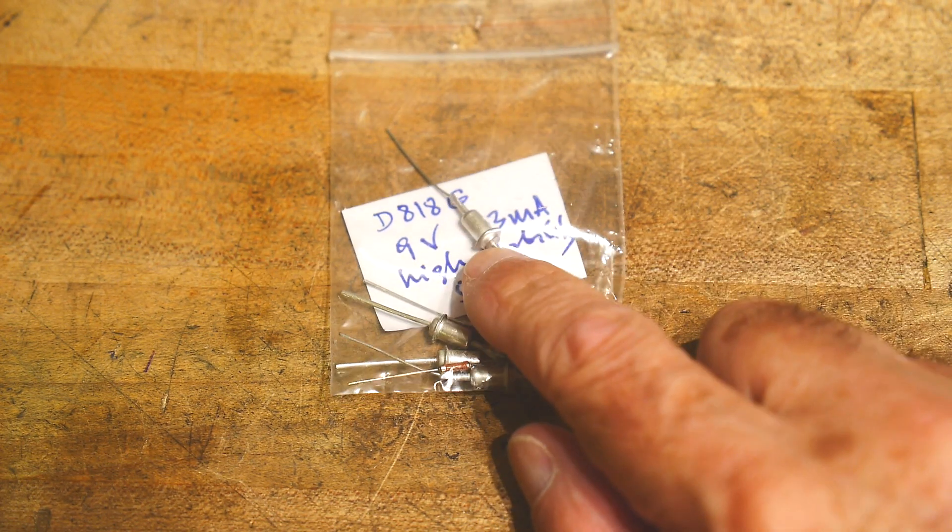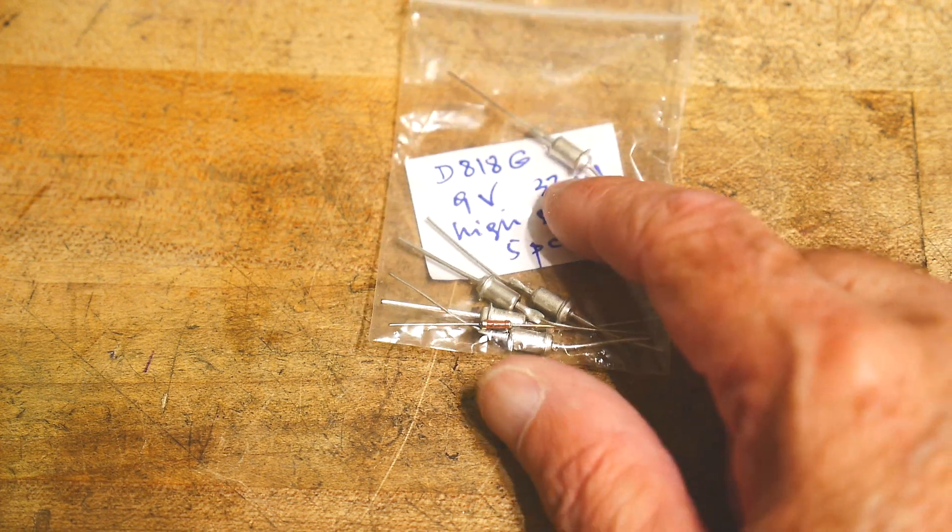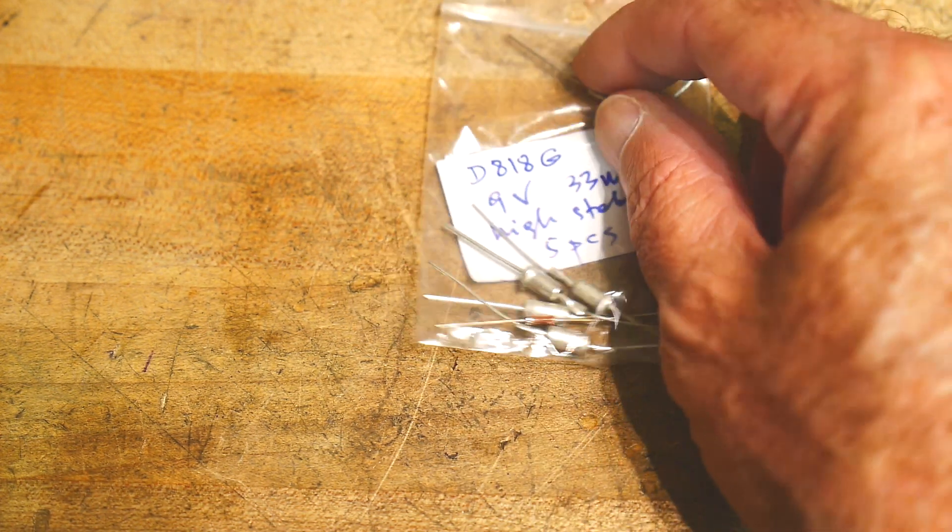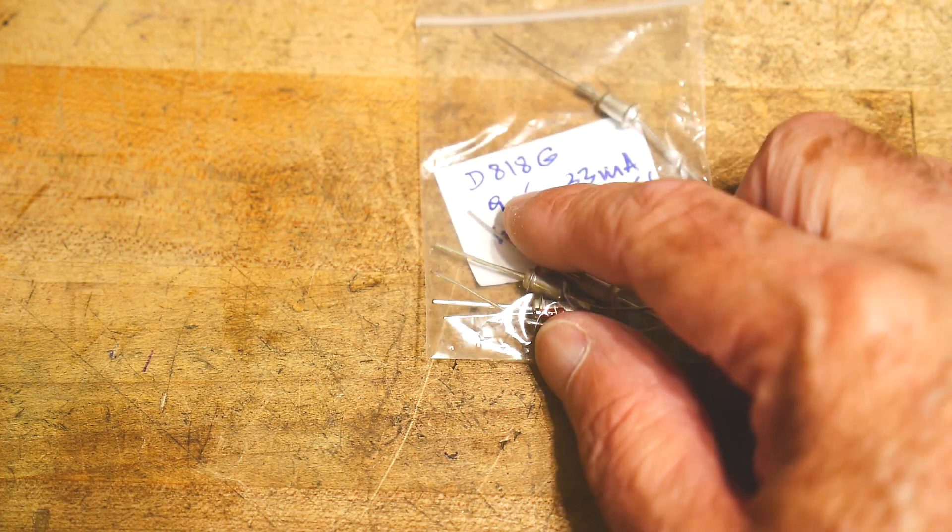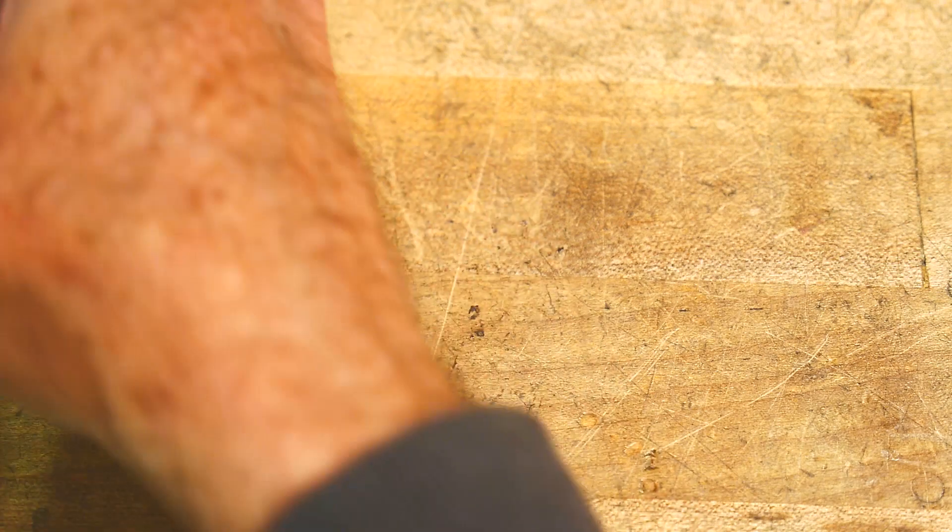I did a video on some Russian parts and I had these Zener diodes. They were supposed to be pretty precision, so I actually have a use for them. These are D818Gs, so let's take a look at a datasheet on them.